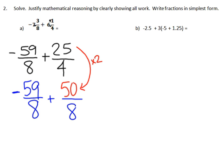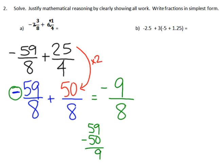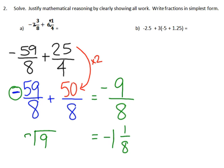Now I can add my fractions. The denominator stays 8, and I add negative 59 plus 50. These have different signs — one's positive and one's negative — so I subtract the absolute values, which gives 9. Since there are more negatives, I end up with negative 9 eighths. My final step is to change that back into a mixed number by dividing: 9 divided by 8 goes in once with 1 left over, giving negative 1 and 1 eighth.